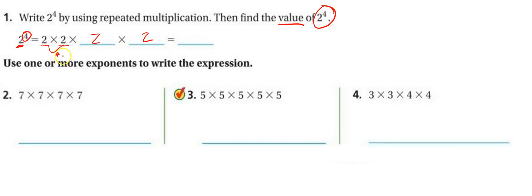2 times 2 is 4. 4 times 2 is 8. And 8 times 2 is 16. So that's our value.